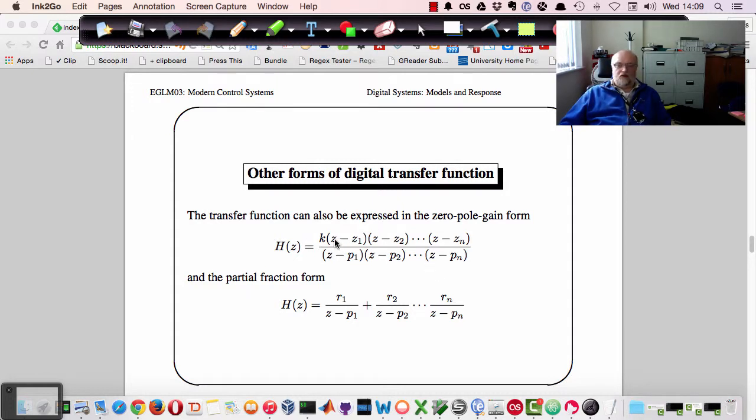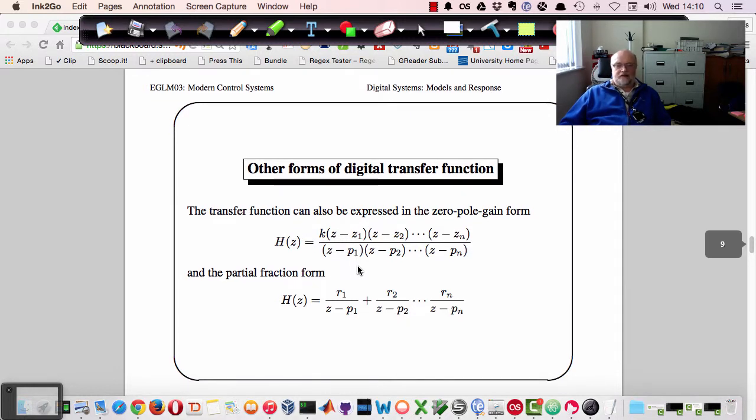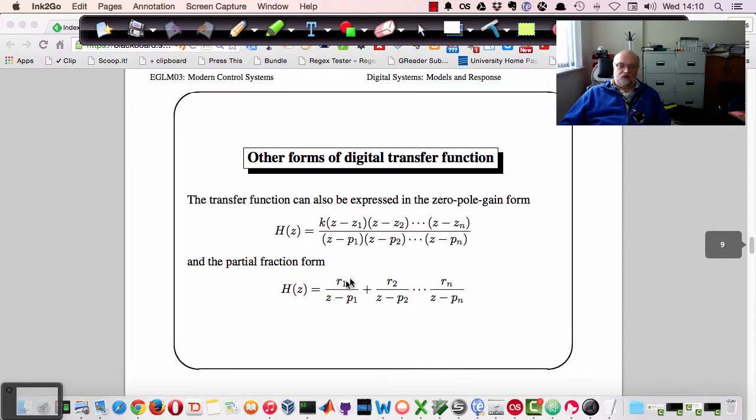And of course, we can always get z rather than z to the minus one by cross-multiplying by z to the n. And in determining a transfer function response or a response to a system, it's more often convenient to put it into partial fraction form, where r is a residue and we've got the poles.